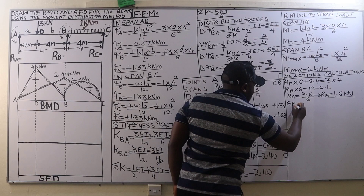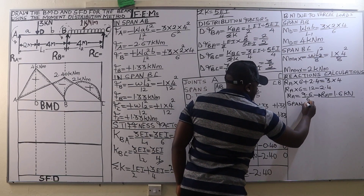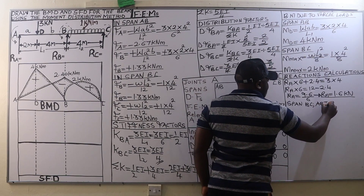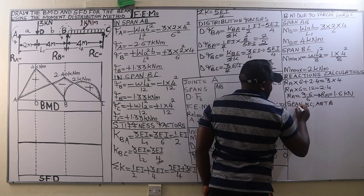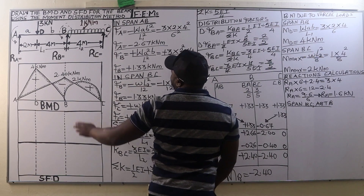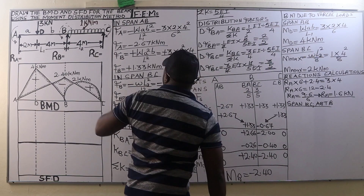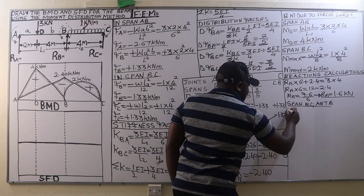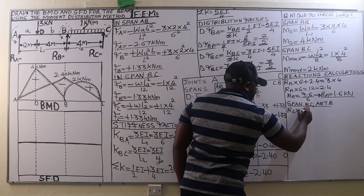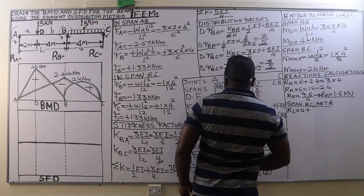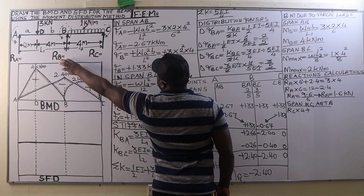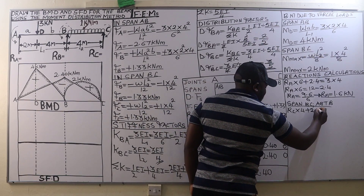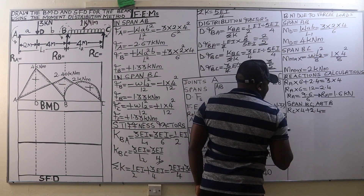Next we go to span BC and take moments about B. Taking moments about B, we have anticlockwise moments: RC times the distance from C to B, which is 4 meters, so RC times 4, plus another anticlockwise moment — the bending moment at B of 2.4 kilonewton meters.